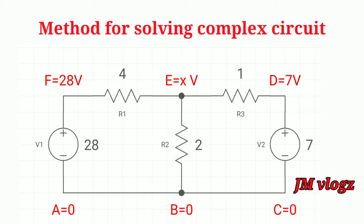Think about junction E. We take junction E as X volt which is at higher potential. That means all the currents are leaving from junction E according to tip number 3.